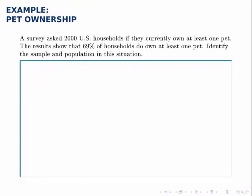Here we'll do a quick example where we identify the sample and the population in a survey. The question asks: a survey asked 2,000 U.S. households if they currently own at least one pet. The results show that 69% of households do own at least one pet. Identify the sample and the population in this situation.